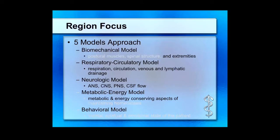The respiratory/circulatory model goes back to the idea that the rule of the artery is supreme. Without good oxygenation, good ventilation, or adequate tissue perfusion to the area of primary complaint, these are all issues. Many things we see in the hospital — COPD exacerbations, pneumonia — are directly related to the respiratory system. Heart failure and MI are directly related to the circulatory system, and there should be findings accordingly. The neurologic model is probably what we look at most when thinking about the osteopathic exam.